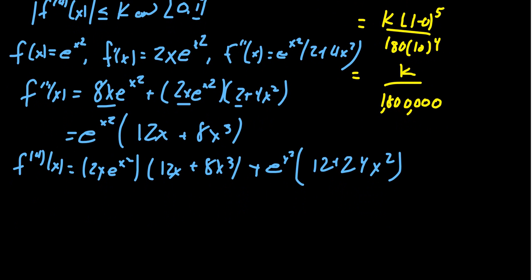Just make it a little bit cleaner. e to the x squared, that leaves behind a 2x times 12x. That's going to be 24x squared. That combines with that one, gives me 48x squared. 2x times that by 8x cubed gives me 16x to the fourth. And then finally, there should be a 12 right there. 12 plus 48x squared plus 16x to the fourth. That's great.